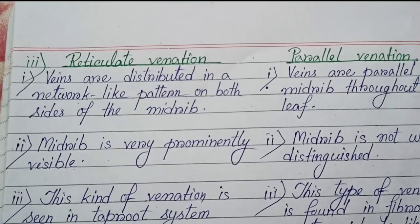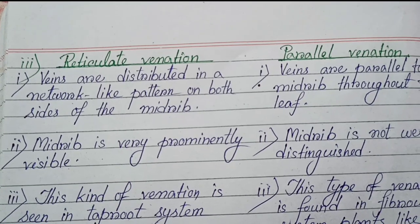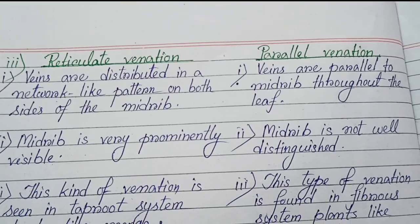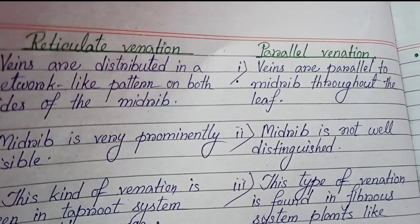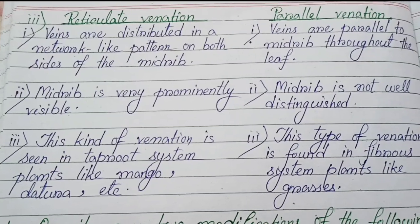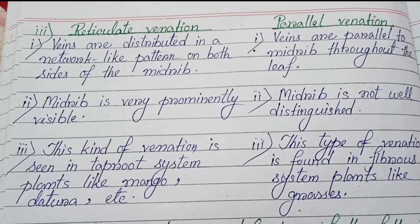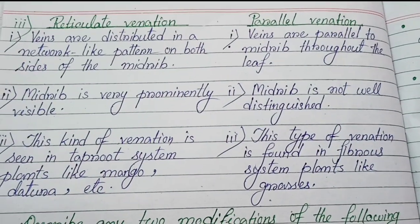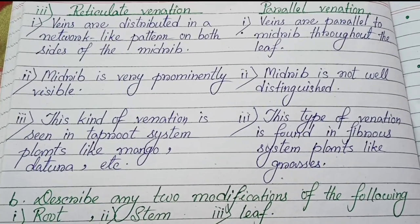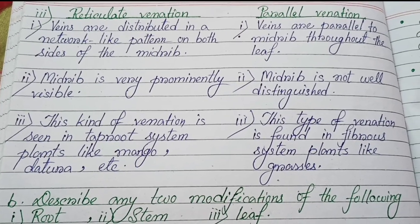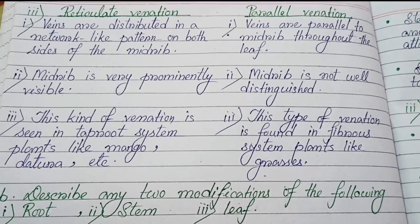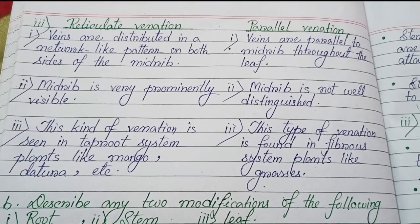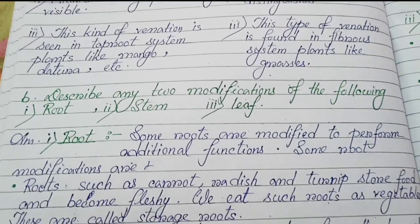Number three: Differentiate between reticulate venation and parallel venation. Reticulate venation: (1) veins are distributed in a network-like pattern on both sides of the midrib; (2) midrib is very prominently visible; (3) seen in tap root system plants like mango, datura, etc. Parallel venation: (1) veins are parallel to the midrib throughout the leaf; (2) midrib is not well distinguished; (3) found in fibrous root system plants like grasses.